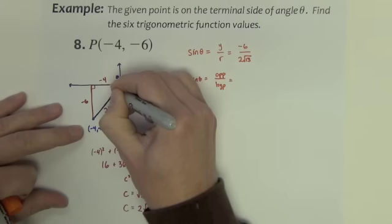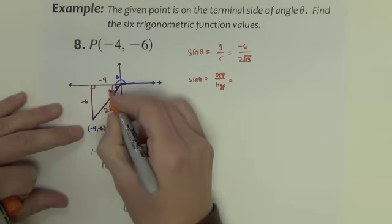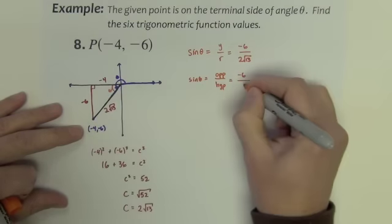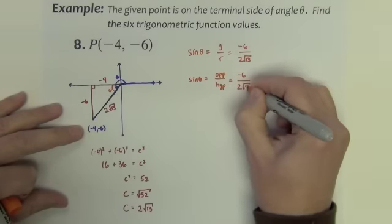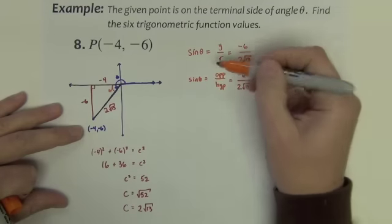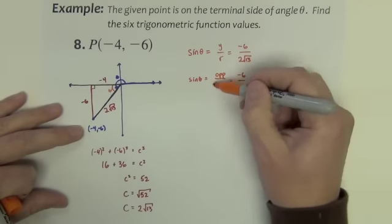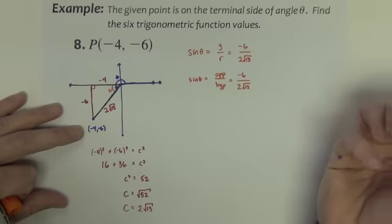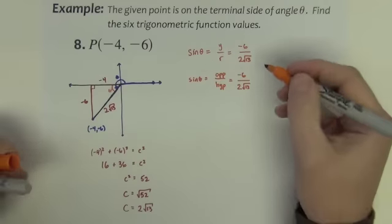I could also think of the sine as the opposite over the hypotenuse. Here's my angle inside the triangle. Opposite is negative six. Hypotenuse is 2 square root of 13. Either way I think of it, I get to the same thing. So it really doesn't matter how I do it.